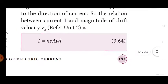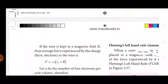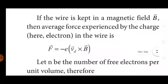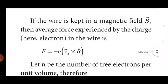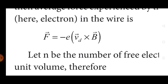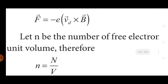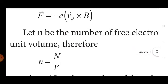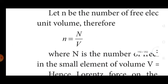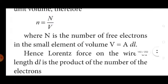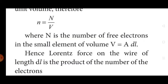The relation between current and the magnitude of drift velocity Vd is: I = nEVd. If the wire is kept in a magnetic field B vector, then the average force experienced by the charge — that means the electron — in the wire is F vector = −e(Vd vector × B vector), where the minus sign means negative charge, and Vd is the drift velocity. Let n be the number of free electrons per unit volume, so capital N = n × V, where V is a small element of volume equal to A·dL.